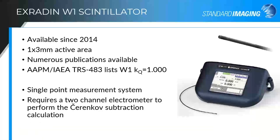The W1 is still a single point measurement system. It was not necessarily designed for water tank scanning, although it is watertight and can be used in a water tank. It does require a two-channel electrometer in order to perform the Cherenkov subtraction calculation.